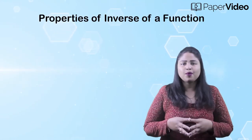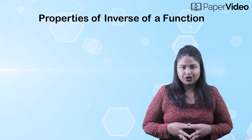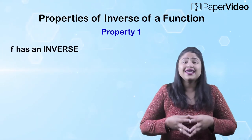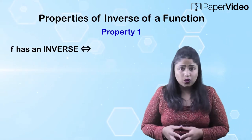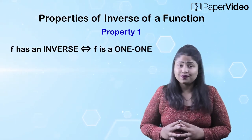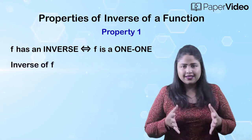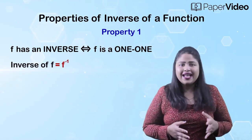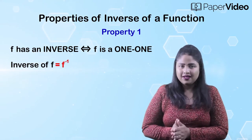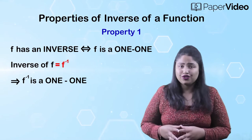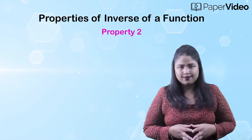In this video, we will discuss some important properties of the inverse of a function. According to the first property, a function f has an inverse if and only if the function f is a one-to-one function. The inverse of f is denoted by f inverse, and the function f inverse is also a one-to-one function.